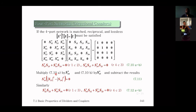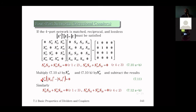We multiply equation 7.01a by S24 conjugate and equation 7.01b by S13 conjugate, then subtract. The result is equation 7.11: both S13 and S24 are common terms, so S14 conjugate can be factored out, yielding the simplified relation.